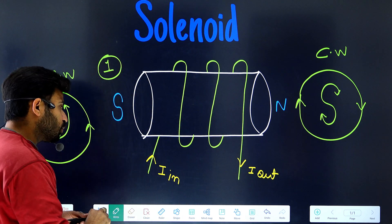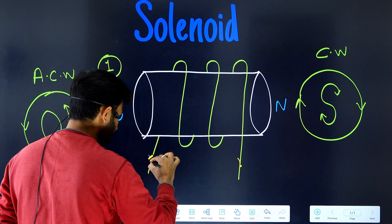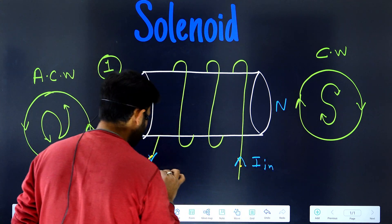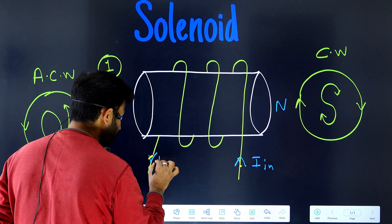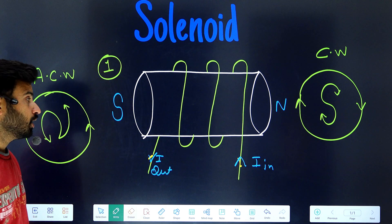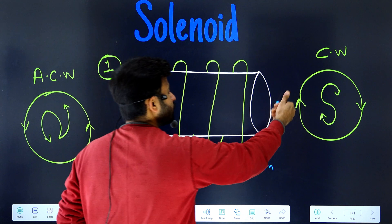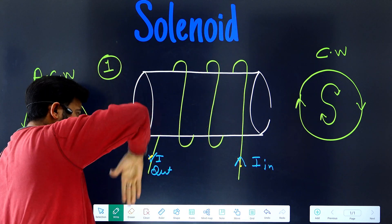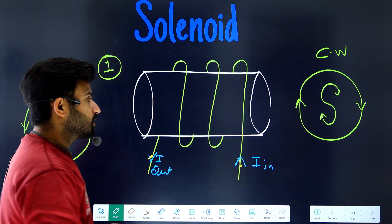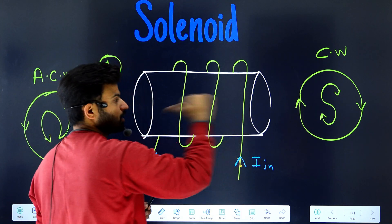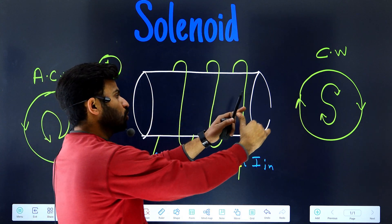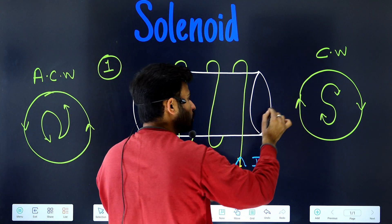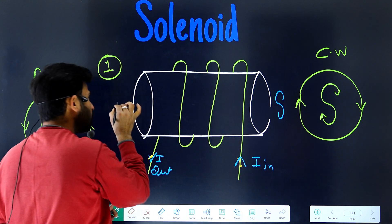The same rule applies in the vice versa case. If the current is coming in from this side — current in — and going out from this side — current out — then your thumb is pointing from south to north in the opposite direction. So this end becomes south and this end becomes north.